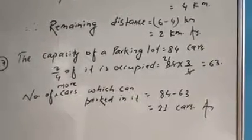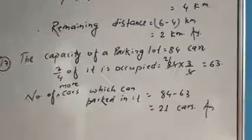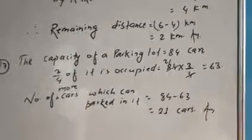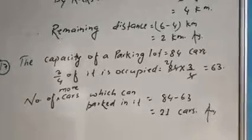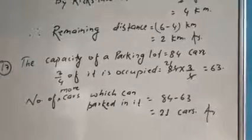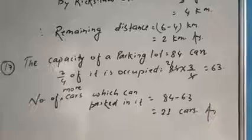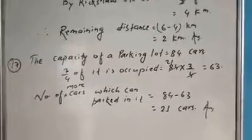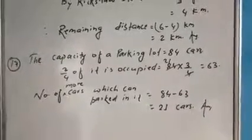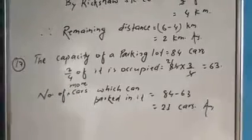So what are we going to do? Find the 3 by 4 portion occupied. This is 84 into 3 by 4, that means total 63 cars are parked. Number of more cars which can park: total number of cars minus occupied portion, so 84 minus 63, it will become 21.